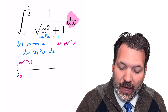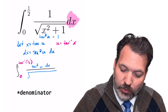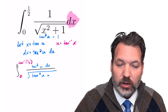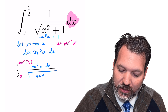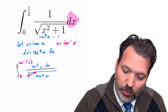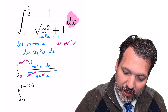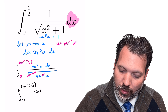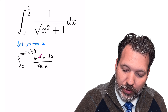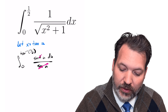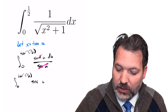For the integrand: dx equals secant squared u du, and for the denominator we take the square root of tan squared u plus 1, which by the Pythagorean identity equals the square root of secant squared u — and the square root and the square cancel. So this becomes the integral from 0 to the inverse tangent of one half of secant squared u over secant u, which simplifies to simply the integral of secant u du.